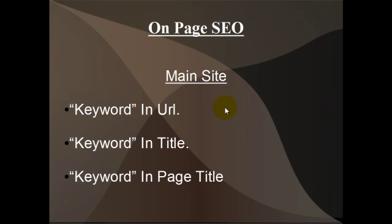The first job is for the main site, for our homepage, or for the whole blog itself. We need the keyword in the URL. So if our keyword was weight loss, it would be www.weightloss.com or .net or .org. Obviously weightloss.com is probably gone. So you need your keyword in your URL. This applies also if you're using long tail keywords — you need your keyword somewhere in your URL.